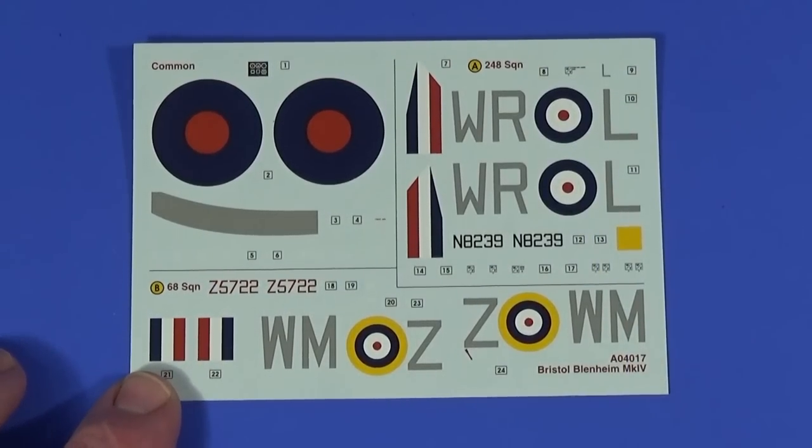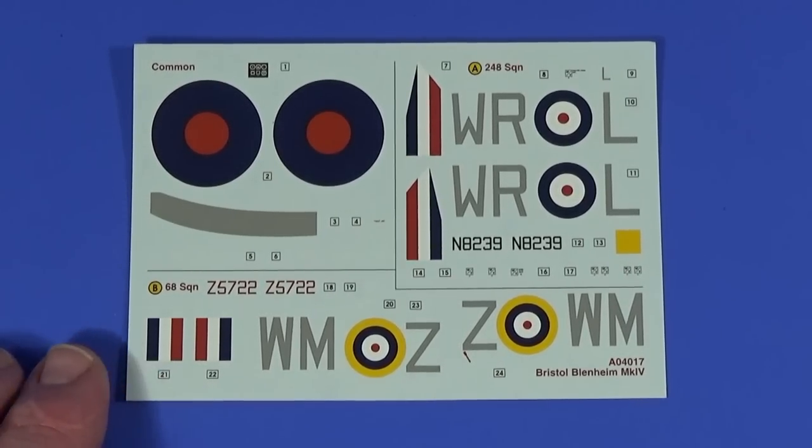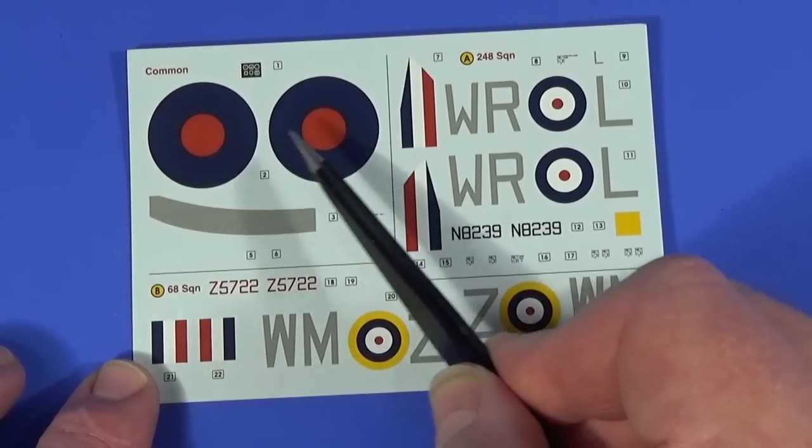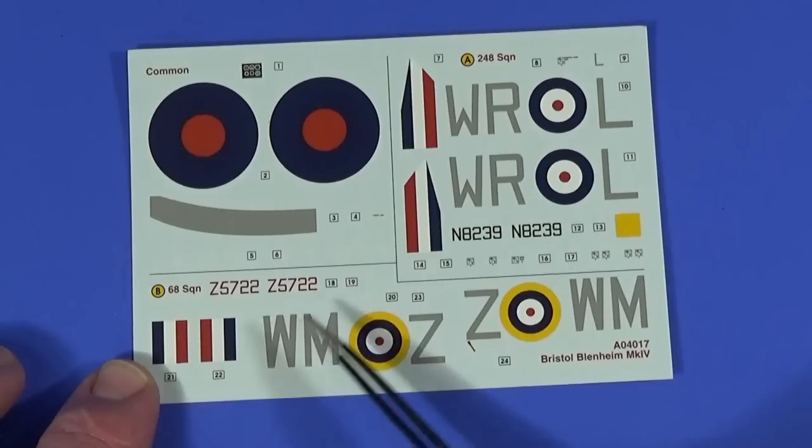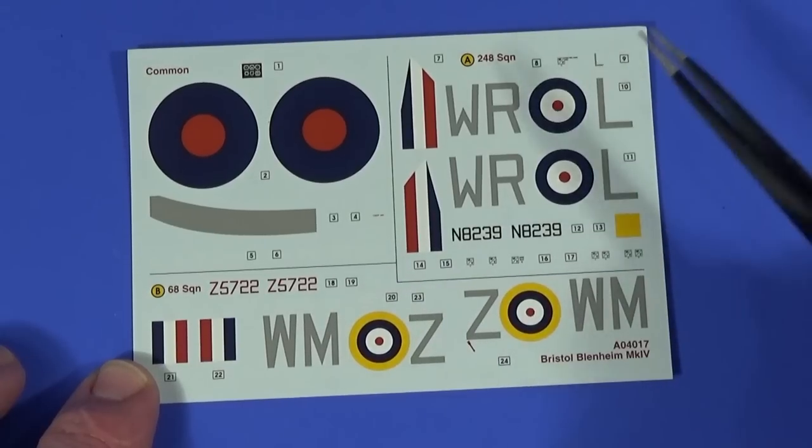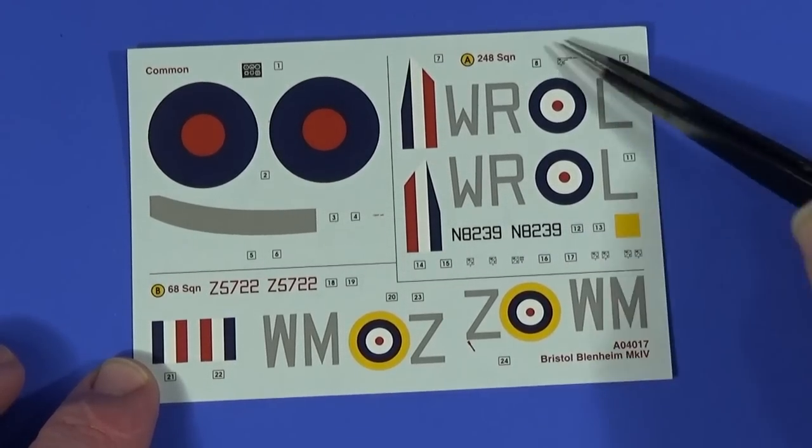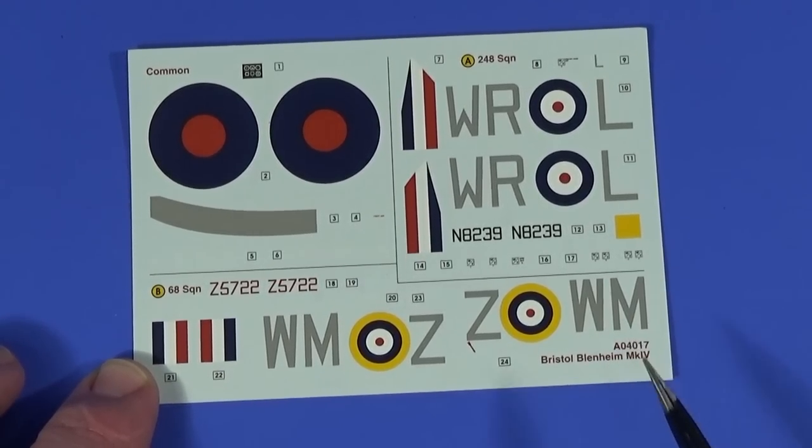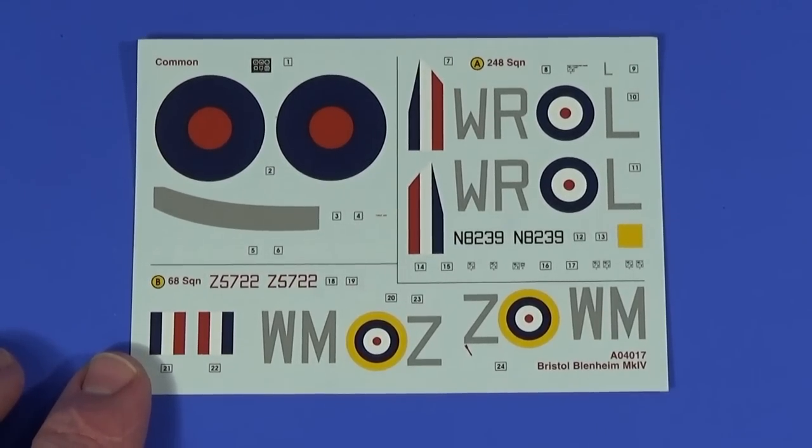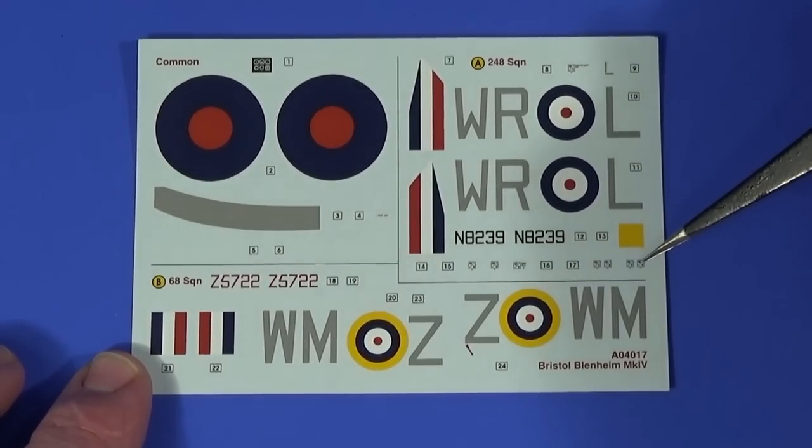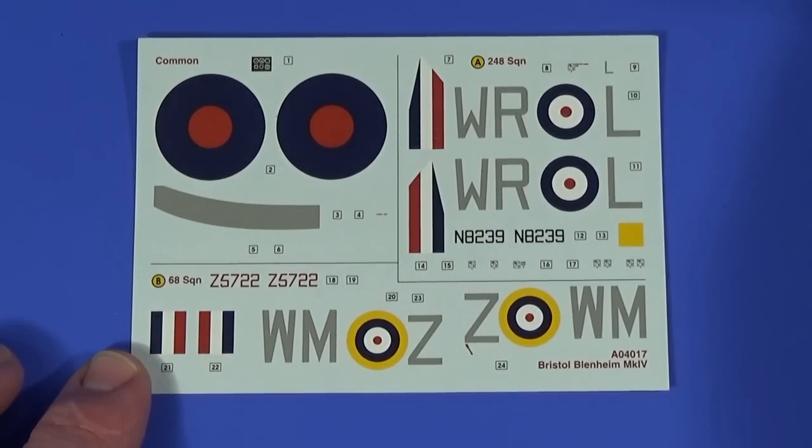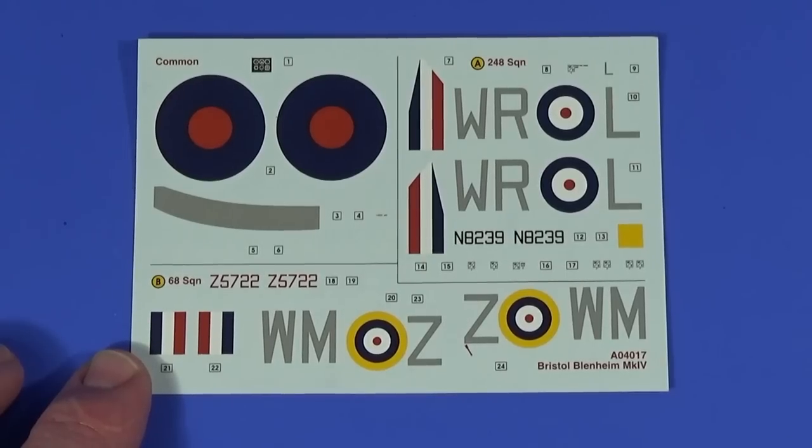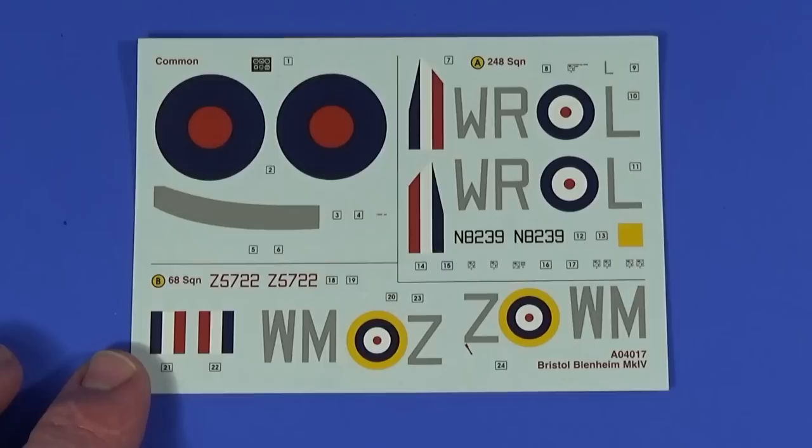And then the decal sheet, which is really quite concise, let's say. So common stencils here, stencils. There's something, I guess that's the instrument panel, upper surface roundels, walkway and a few... There are some white things here. The 248 Squadron aircraft, daytime one, these are the parts you need for that. And then the nighttime all over black one from 68 Squadron, these are the markings for them. There's very, very little in the way of stencils to go on. That's what, 24 decals in total to cover essentially two types of plane. So very basic set, but still very sharp and very well colored.